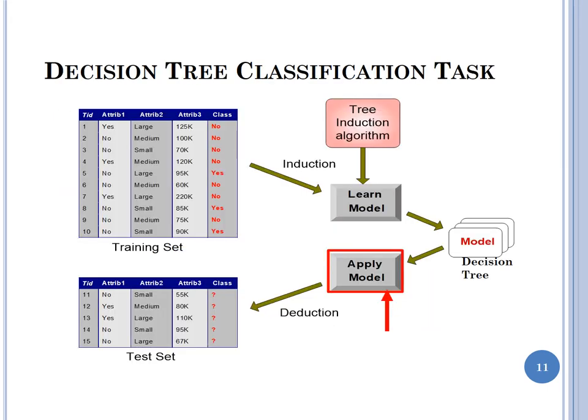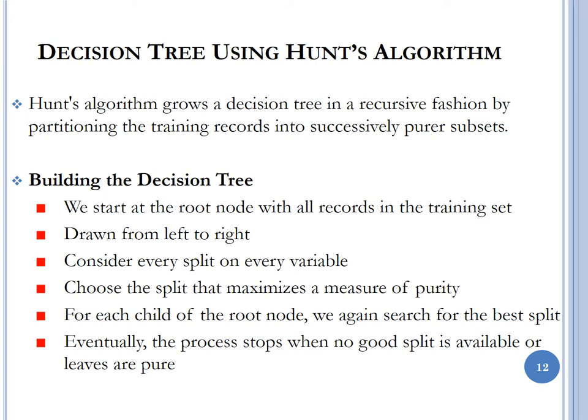Graphically, we have our training set creating and learning to build the model, and then the test set where we apply the model to the test data to determine if the model predicts the class variable accurately. For this course, we will be using the Hunt's algorithm to grow the tree in a recursive fashion by partitioning the training records into successively purer subsets.